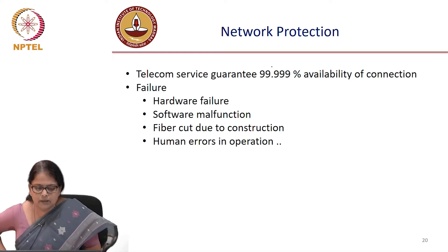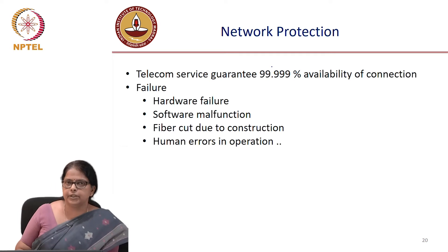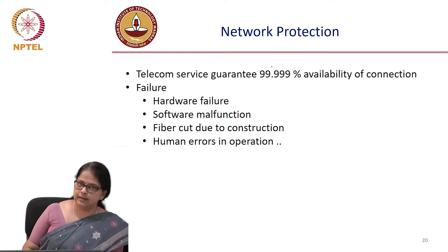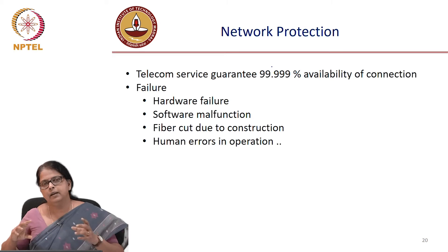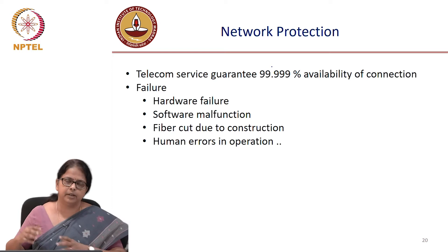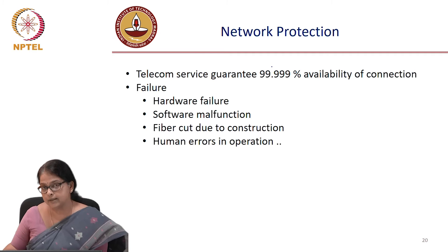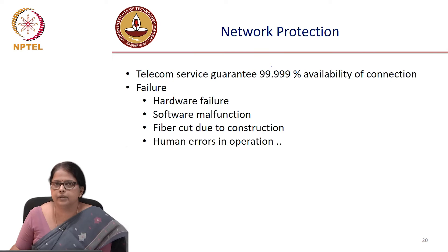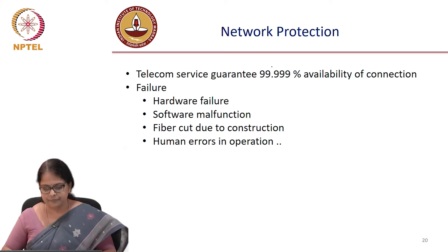So what are the sources of failure? Why should the network fail? The network could fail because the transmitter or receiver hardware fails, or software fails. There is a lot of software management happening in the network when establishing a circuit or routing a packet in a packet switching network. If the software fails, that is a network failure. The most important reason for network failure, especially in a country like India, is fiber cut due to construction.